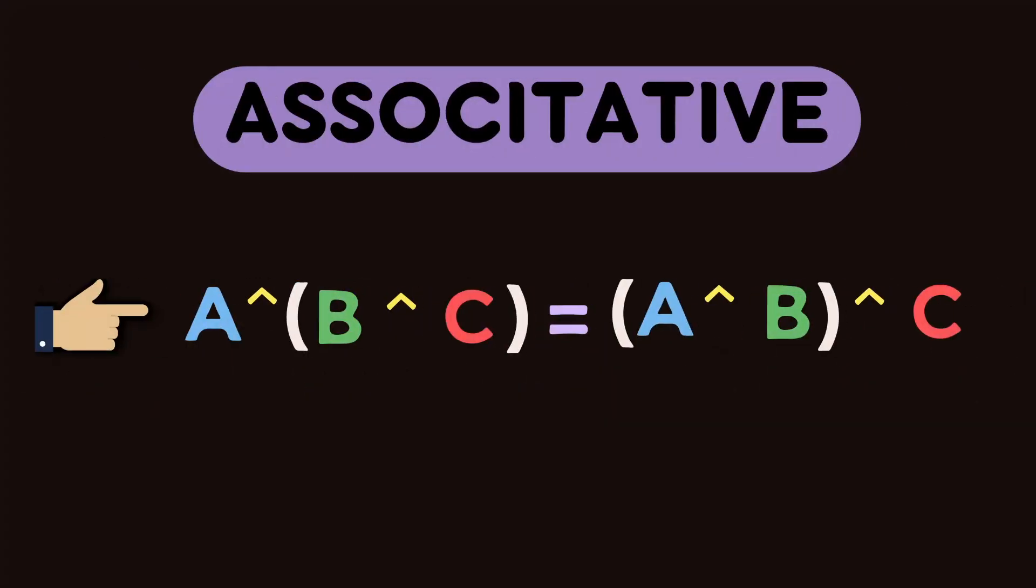We can perform XOR operations in any order. A XOR B XOR C equals C XOR A XOR B. This is the associative property.